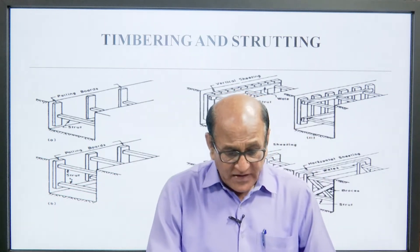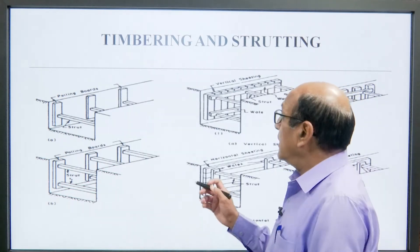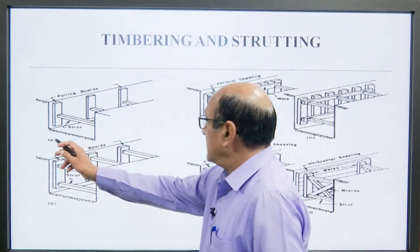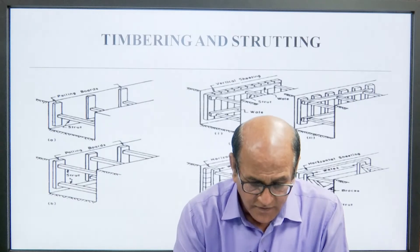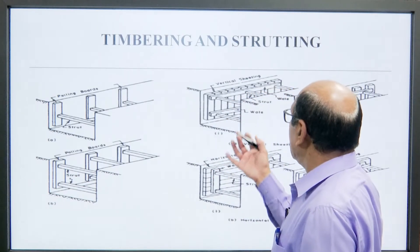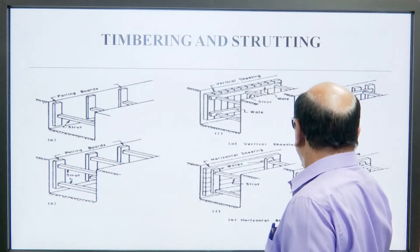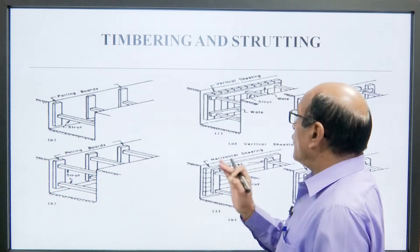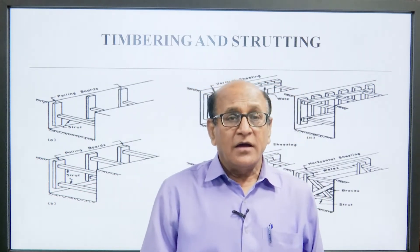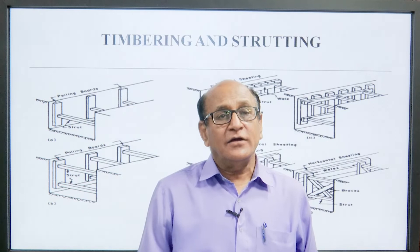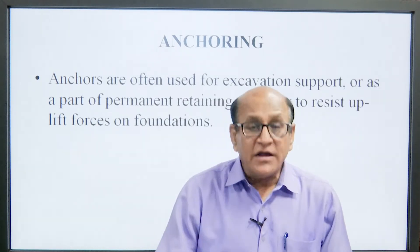Different types of timbering arrangements are shown in the diagrams labeled a, b, c, and d, illustrating how timbering and strutting provide support to the form sides of a trench. Anchors are often used for excavation support as part of permanent retaining walls, and also resist uplift forces on foundations.